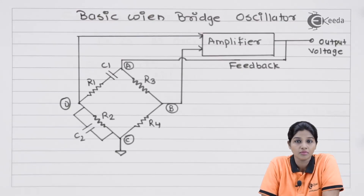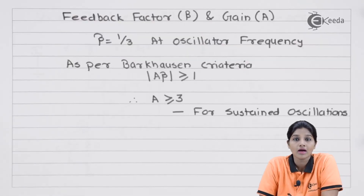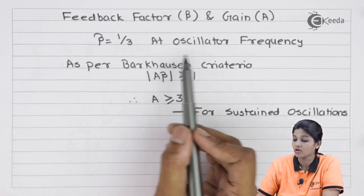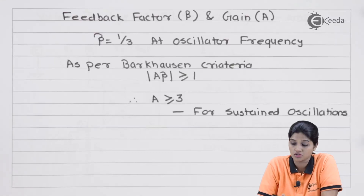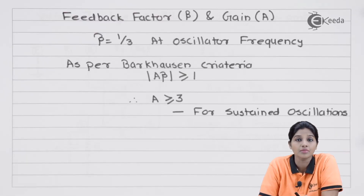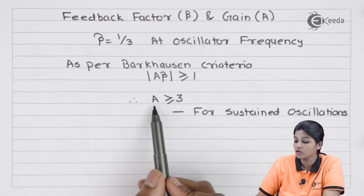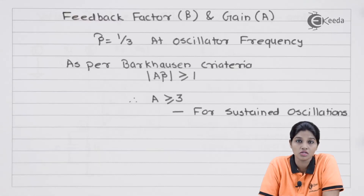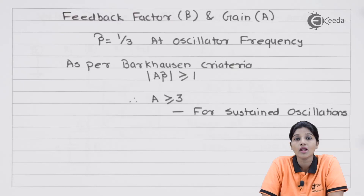Now let's see what criteria are required to be satisfied for sustained oscillations. The feedback network must have a feedback factor β equal to 1/3. When β equals 1/3 at the oscillator frequency, we can have sustained oscillations. As per Barkhausen's criteria, the condition is that |Aβ| must be greater than or equal to 1. Therefore, for sustained oscillation in the Wien bridge oscillator, the gain must be greater than 3 — meaning the non-inverting amplifier must provide a gain always greater than 3.